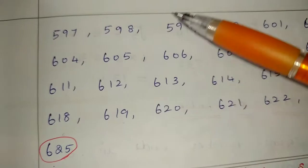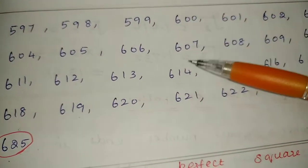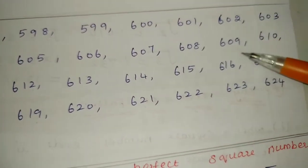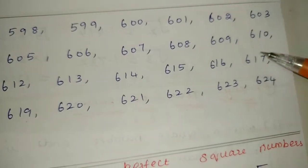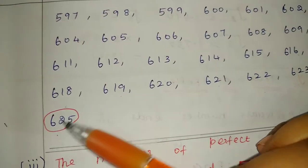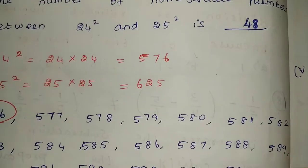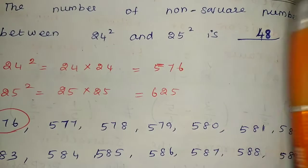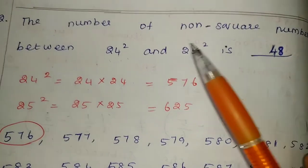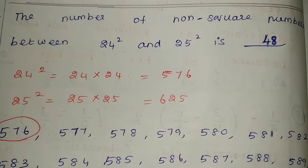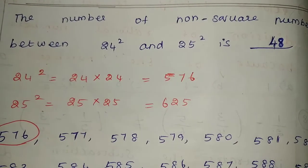Counting the numbers between 576 and 625: 25, 26, 27, 28, 29, 30, 31, 32, 34, 35, 36, 37, 38, 39, 40, 41, 42, 43, 44, 45, 46, 47, 48 — the count between them is 48. So once again, using the rule: consecutive number first value 24 into 2 gives 48. This is the most straightforward consecutive rule.